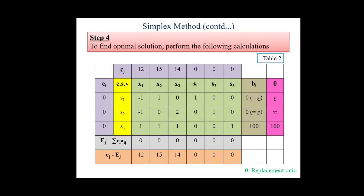Now to find the optimal solution, we have to perform some calculations in this. So what are those calculations? Step 1: We will calculate ej, which is summation of ei into aij. So what you can see the highlighted part.